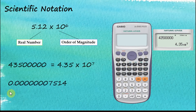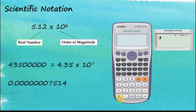Let's try another example with a very small number. To display it in scientific notation, we key it into the calculator: 0.0000007514750 — that is, seven zeros followed by 75147514.